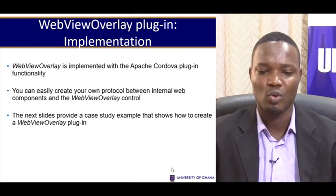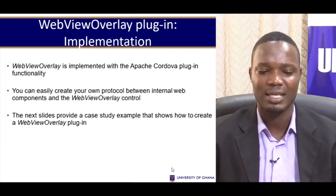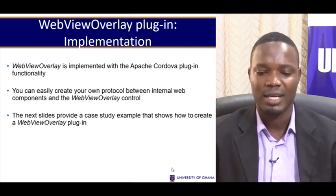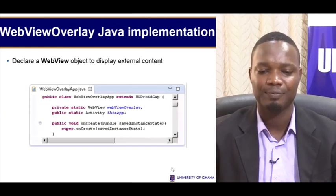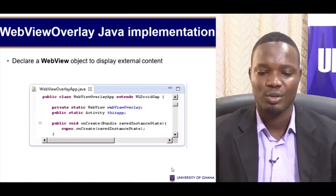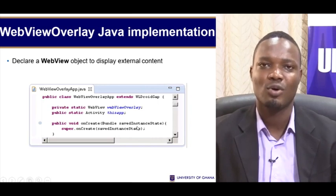How do we implement the WebView overlay? It's implemented with the Apache Cordova plugin functionality. You can create your own protocol between internal web components and the WebView overlay control. The first thing you need to do is declare a WebView object to display the external content. This code snippet shows that — just like creating a plugin, we always need some native code.